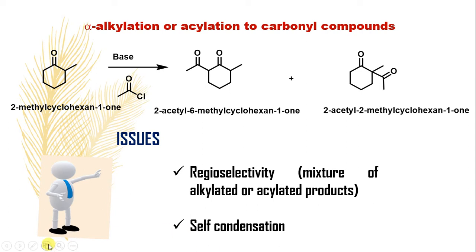Let us take an unsymmetrical carbonyl compound — 2-methylcyclohexanone. The treatment of this compound with a base and acid halide produces two different types of products: 2-acetyl-6-methylcyclohexanone, where acylation happened at the less substituted site, and 2-acetyl-2-methylcyclohexanone, where acylation happened at the more substituted site.